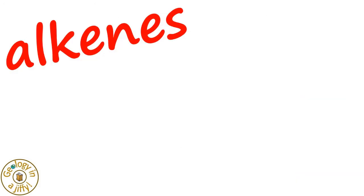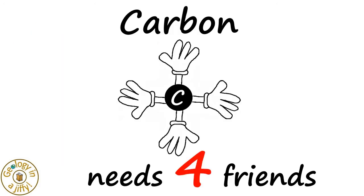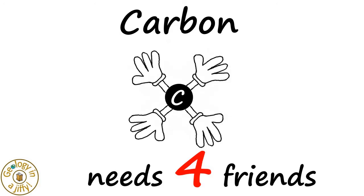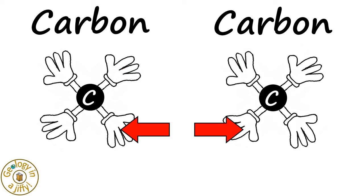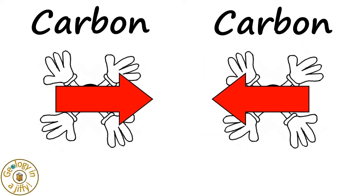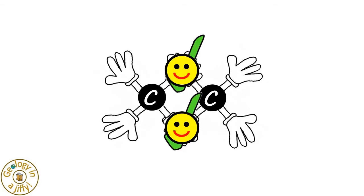Alkenes must have one double bond between two of their carbon atoms. We know that carbon needs four friends, so if we spin it slightly and study two separate carbon atoms, we can see that these two hands match up, as do these two hands. If we move the carbon atoms closer to each other, the hands touch, so the four hands are now stable and happy.